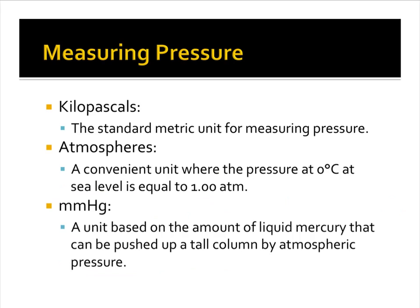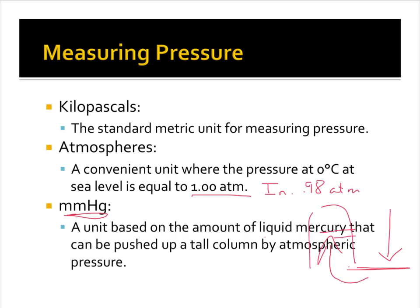Kilopascals is the standard metric unit. Atmosphere is convenient because at zero degrees Celsius and sea level it's equal to one. In Indiana we are around 0.98 atmospheres generally — a very small change even though we do have a little bit of elevation here. Millimeters mercury is based on the amount of liquid mercury that can be pushed up a column by the atmospheric pressure. The pressure pushes down onto a big container of mercury, and that mercury is pushed up a tube that has little markings on it. How far it goes up — that's millimeters of mercury.